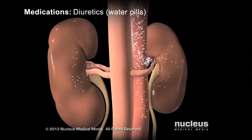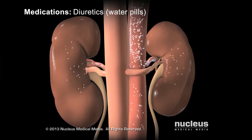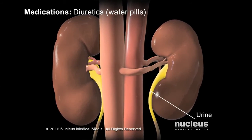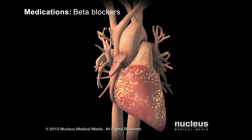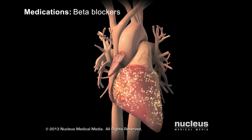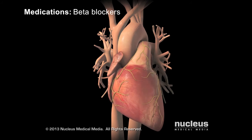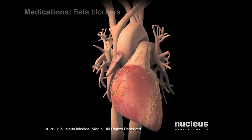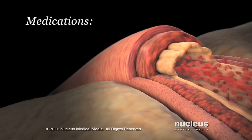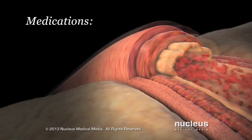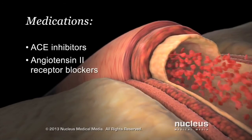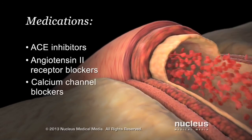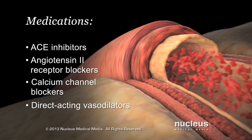Diuretics, commonly called water pills, cause your kidneys to move more salt and water from your blood into your urine, which reduces your blood volume and pressure. Beta blockers reduce the workload on your heart by decreasing both the rate of your heartbeat and the strength of your heart's contractions. Several types of drugs act directly or indirectly to relax your blood vessels and increase their diameter, including ACE inhibitors, angiotensin-2 receptor blockers, calcium channel blockers, and direct-acting vasodilators.